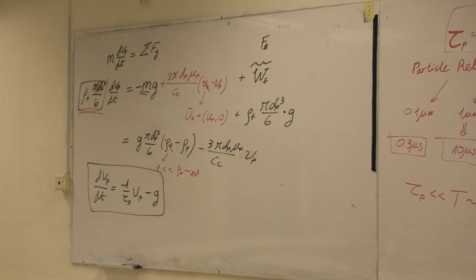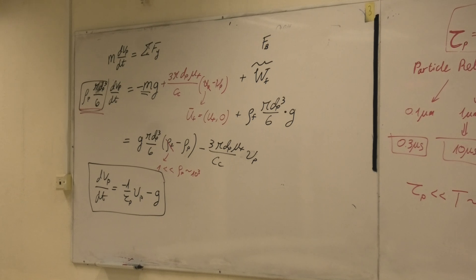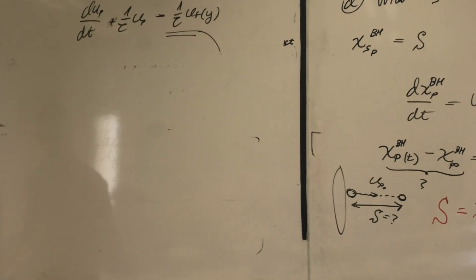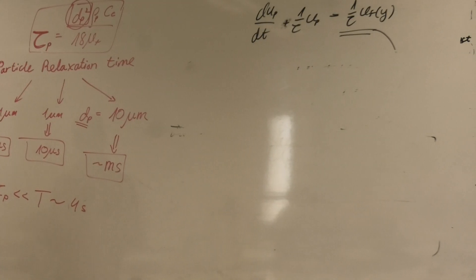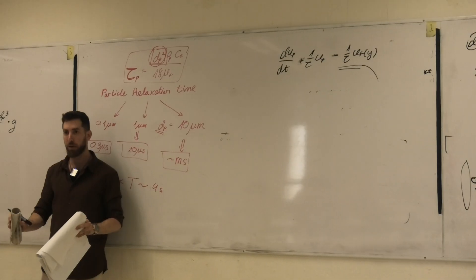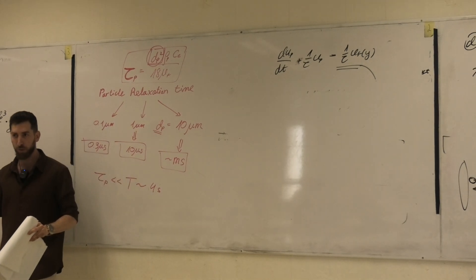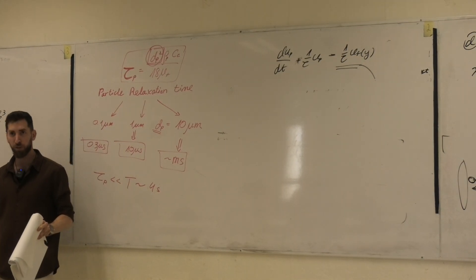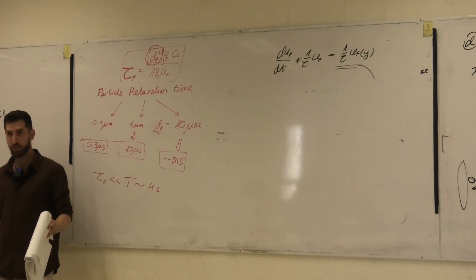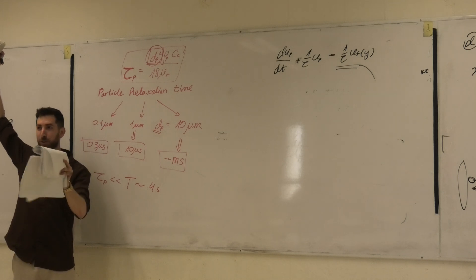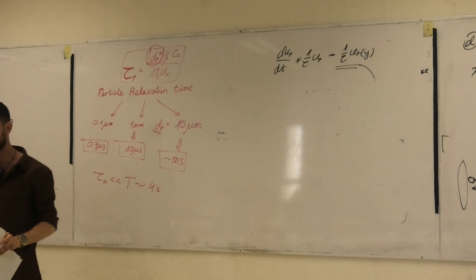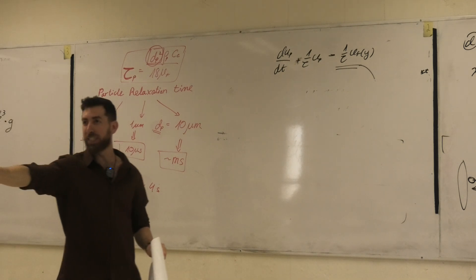The simplified vertical equation, neglecting buoyancy, is: dv_p/dt = -v_p/τ_p - g, where τ_p is the same particle relaxation time. This is an important result. We'll now take a seven-minute break and then continue.